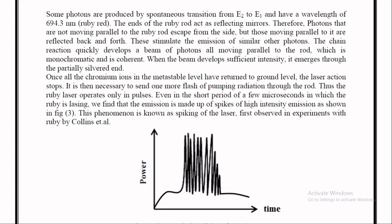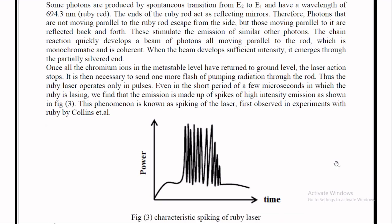The output of the ruby laser is in the form of pulses. This power-time graph of the output clearly shows the output is a pulse.